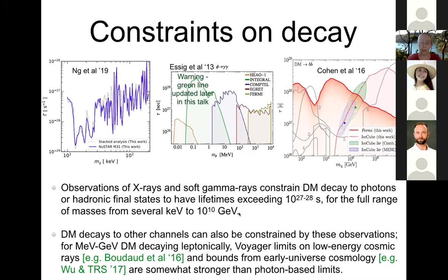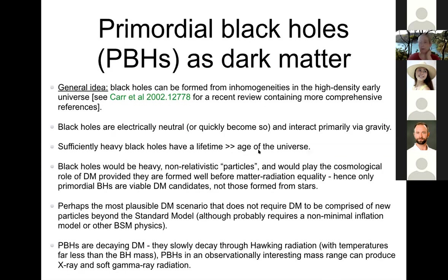There are also bounds from early universe cosmology. So if I have to give you the five-minute version of what X-rays and gamma rays can do to constrain decaying and annihilating dark matter: with annihilation, we can test thermal relic cross-sections up to tens of GeV; with decay, we can test lifetimes of 10^27 to 10^28 seconds over a range of masses from several keV up to 10^10 GeV. Now let me zoom in on the 100 keV to MeV soft gamma ray region and talk about what that means for a specific class of dark matter candidates: primordial black holes.